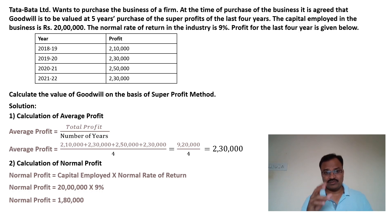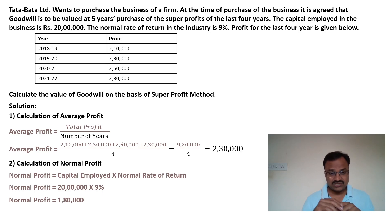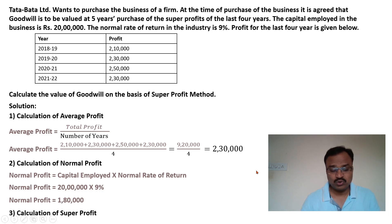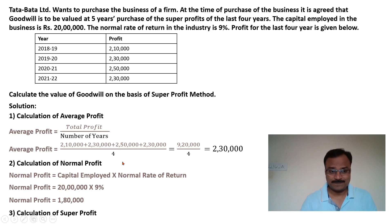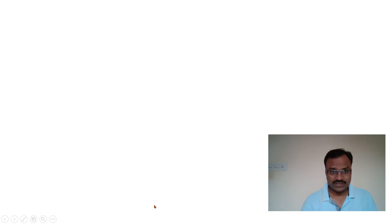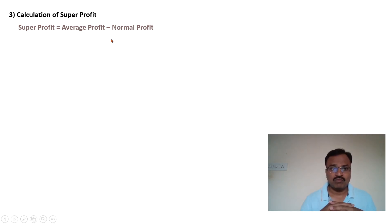Now let us check whether the firm is earning super profit. In the third step we calculate super profit, which is the difference between average profit and normal profit. Super profit = average profit − normal profit = 2,30,000 − 1,80,000 = Rs. 50,000.